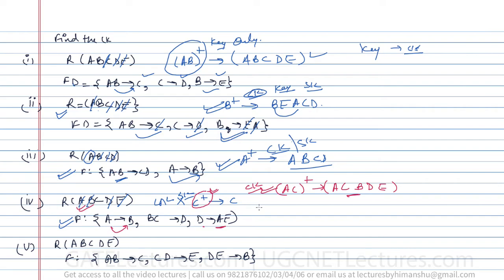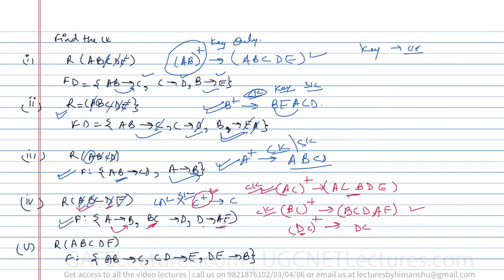There can be more than one candidate key. Let us try BC closure: with BC I identify BC, then BC→D, then D→AE, then with A I get B — so BC identifies everything. BC is also a candidate key. Now DC closure: with D I get AE, with DE I identify A, with A I get B, and with AB and DC I can identify everything. So DC is also a candidate key.